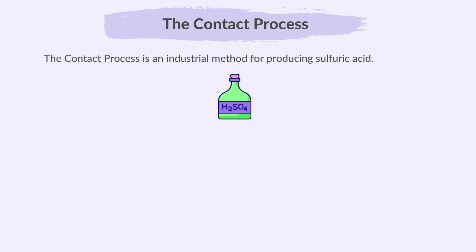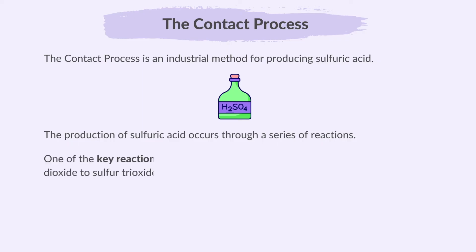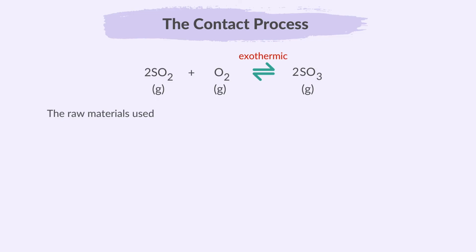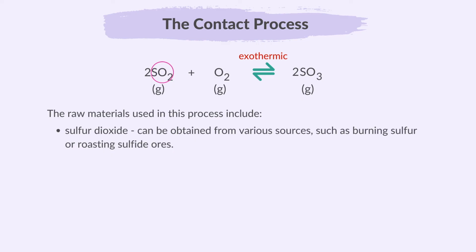Now let's shift our focus to the Contact process. The Contact process is an industrial method for producing sulfuric acid. One of the key reactions involves the conversion of sulfur dioxide (SO₂) to sulfur trioxide (SO₃). This reaction is reversible, and the forward reaction is exothermic. The raw materials include sulfur dioxide, obtained from burning sulfur or roasting sulfide ores, and oxygen, typically sourced from the air.